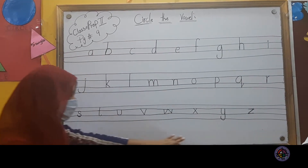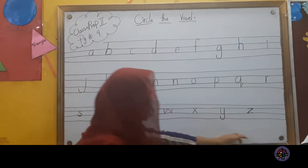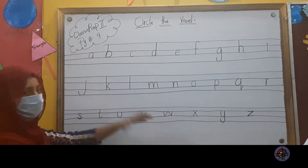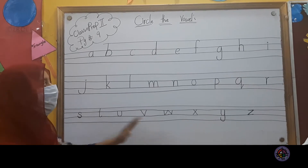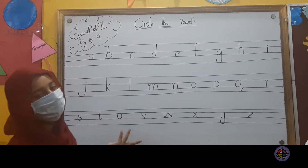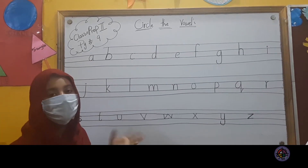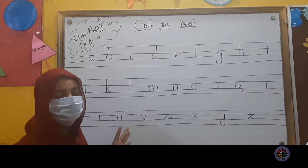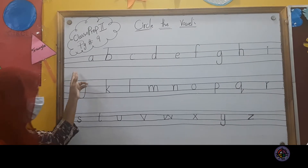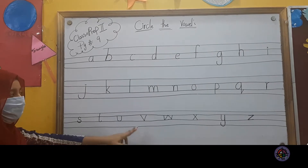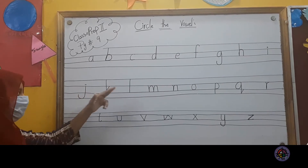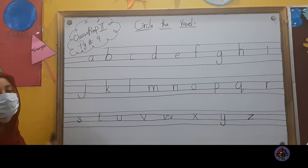Here we have a spool A to C, D, right to E, V, A to Z. Now, you can tell me what are the vowels. We have five vowels, and we have to circle them in A, B, C, D. We have to circle the vowels.